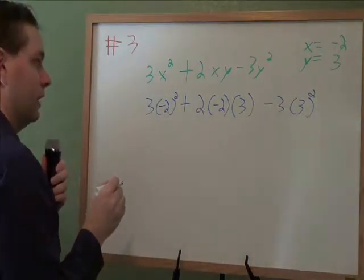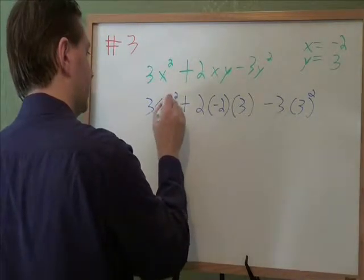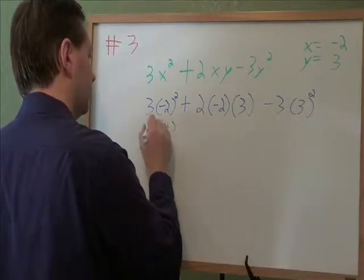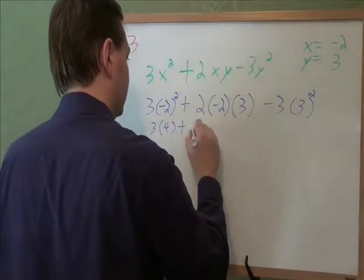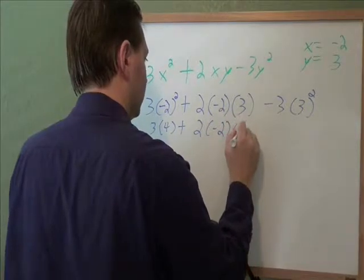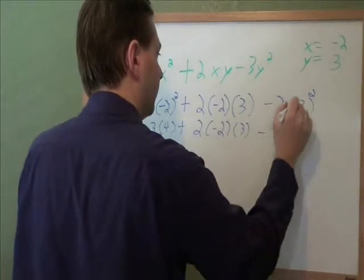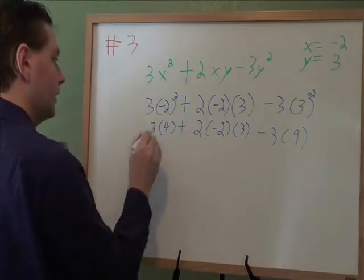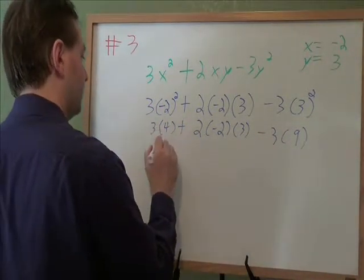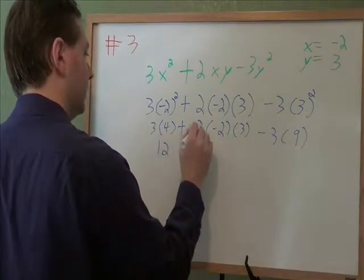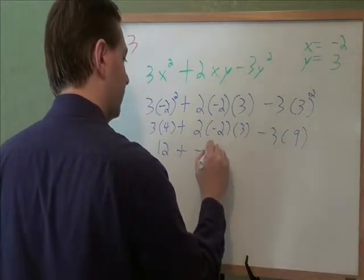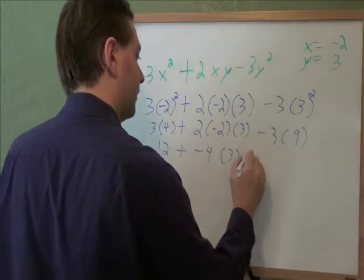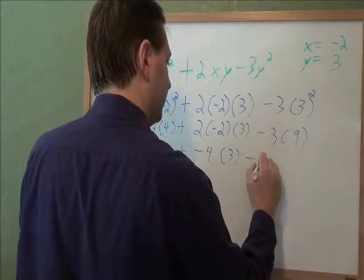And then we just start working out. Exponents go first. What's negative 2 squared? Negative 2 times negative 2 is positive 4. 3 squared, 3 times 3 is 9. Then we do the multiplying. 3 times 4, that's 12. 2 times negative 2 is negative 4. This 3 just comes straight down. 3 times 9, that's 27.